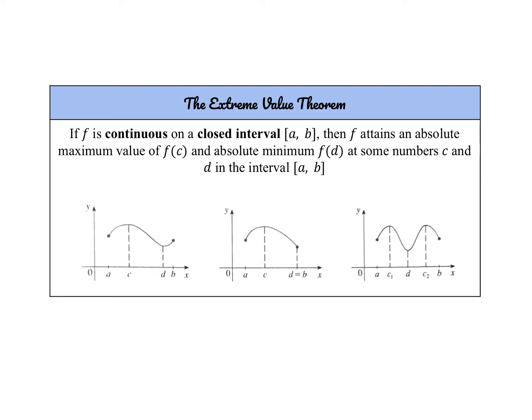Now we're going to talk about the extreme value theorem. This theorem states that if f is continuous — that is important — on a closed interval, also important — the closed interval a to b, then f attains an absolute maximum at f of c and an absolute minimum at f of d at some numbers within that interval. Essentially, if these conditions are true, then there must be an absolute max and an absolute min, or at least one of each.